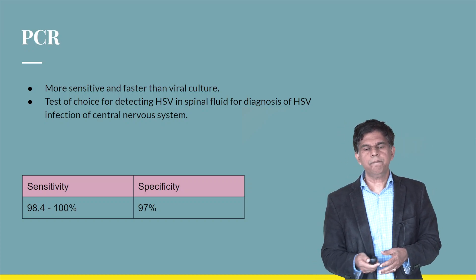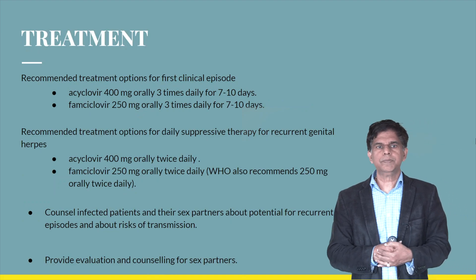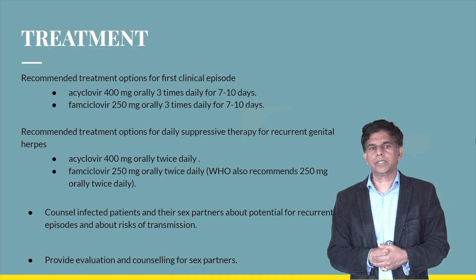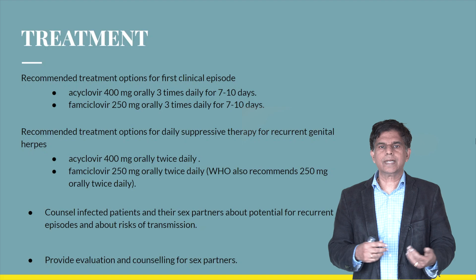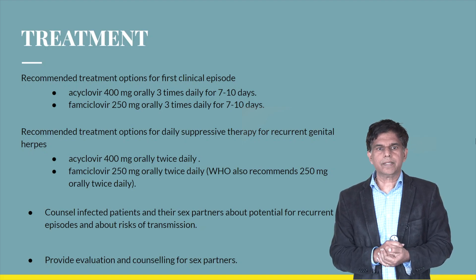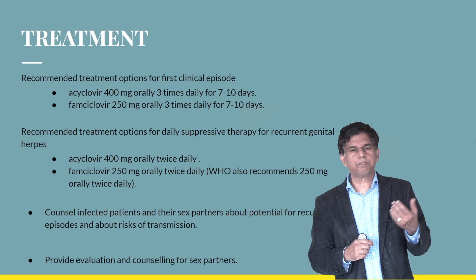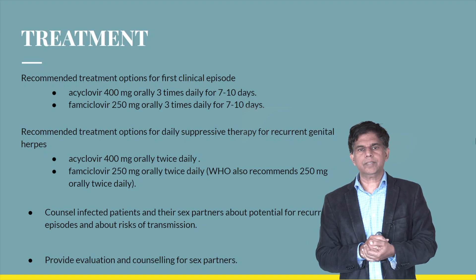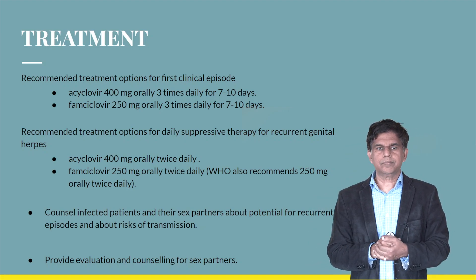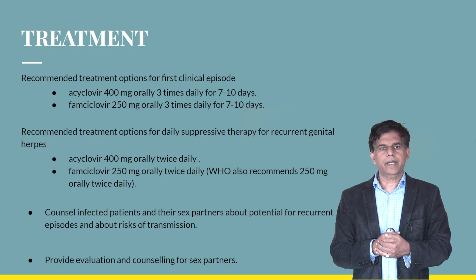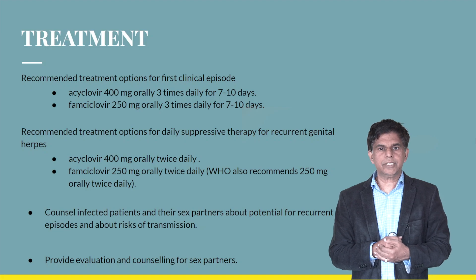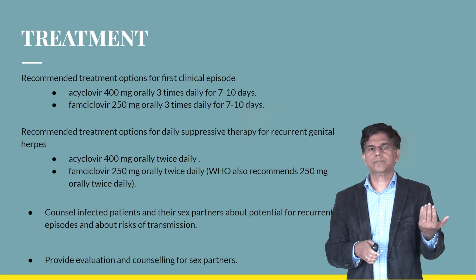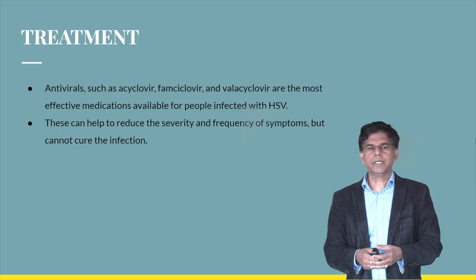The recommended treatments for HSV2 are acyclovir 400 mg orally three times daily for seven to ten days, or famciclovir 250 mg orally three times daily for seven to ten days. For daily suppression therapy in cases of recurrent genital herpes, options include acyclovir 400 mg orally twice daily or famciclovir 250 mg twice daily. It is important to always counsel the infected patient and their sexual partners, notify partners, and provide education and counseling for both.